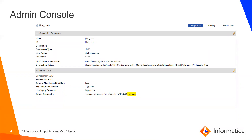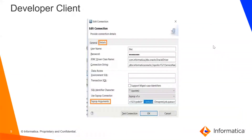To summarize: if doing it from the admin console, we add --verbose in the Sqoop arguments there. If doing it from the developer client, we go to the JDBC Sqoop connection from Window Preferences and put the --verbose flag.